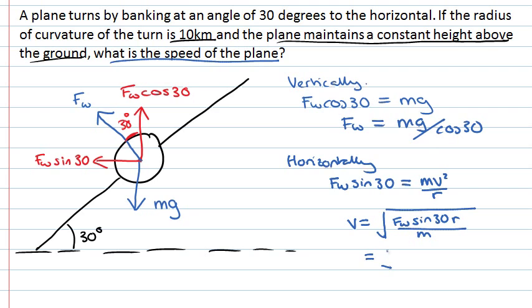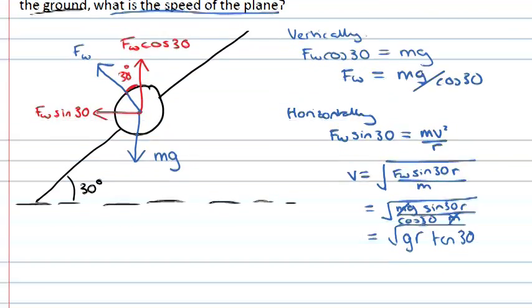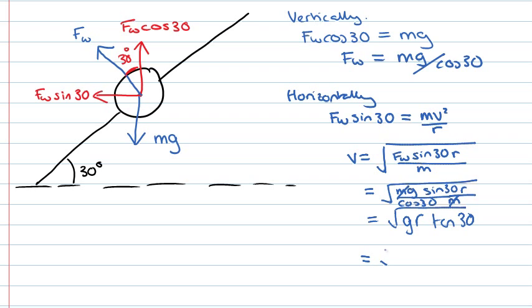So the mass of the plane cancels out, and we're left with the velocity being the square root. So we can put in the numbers that we know at this point. So gravitational acceleration is 9.8 metres per second squared, the radius of this turn is 10 kilometres, so 10,000 metres, and tan 30 we can type into our calculator. And that gives us the answer that the velocity of the plane must be 238 metres per second.